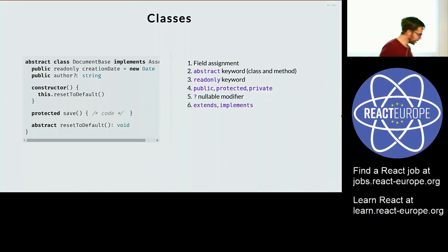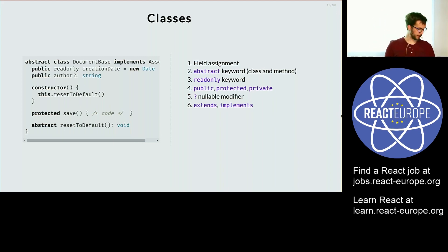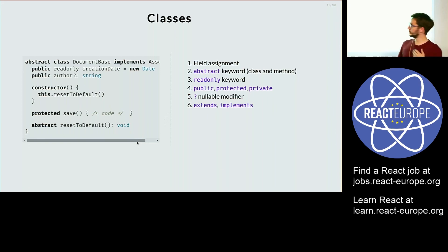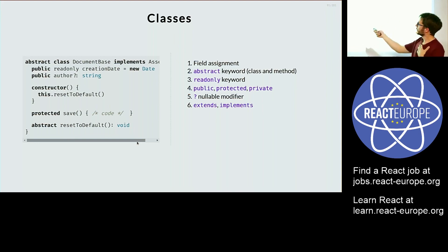So let's talk about classes — how exciting they are. I'm going to touch on classes, but only very briefly, because there are not that many surprising things in them. But there are some things which aren't available in vanilla JavaScript, so that does make them interesting. So to mention all of them: first of all, there are field assignments, or field initializers. They're not available in standard JavaScript — some Babel presets do allow it — but in TypeScript, they have always been available.